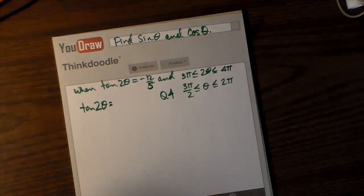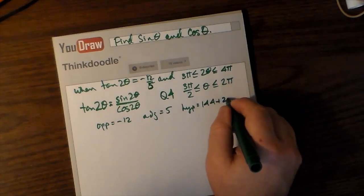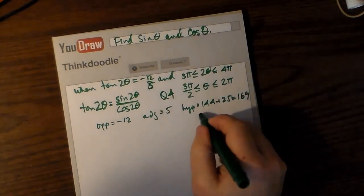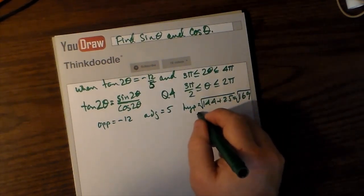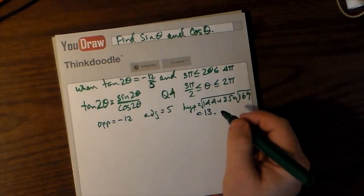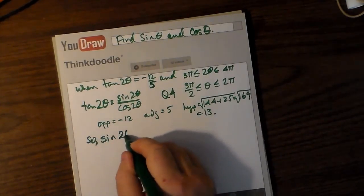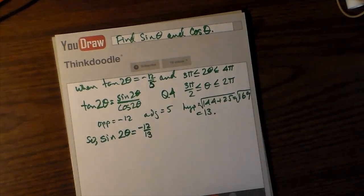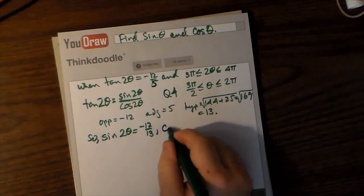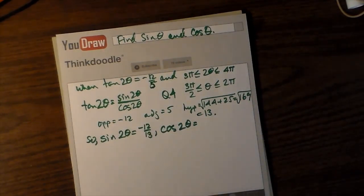2θ is given to be between 3π and 4π, and when we divide by 2 across the inequality, we get 3π/2 to 2π as the position of θ. Tan 2θ can be sin 2θ over cos 2θ, but we can also use SOHCAHTOA — opposite is negative 12 and adjacent is 5. The hypotenuse must be the square root of 12² plus 5², which is √169 = 13. The hypotenuse is always positive, so positive 13.